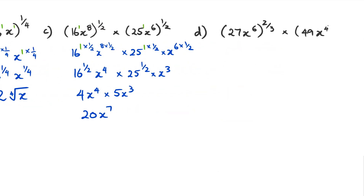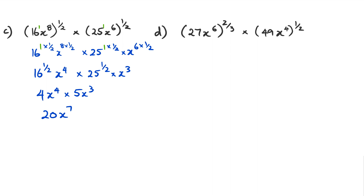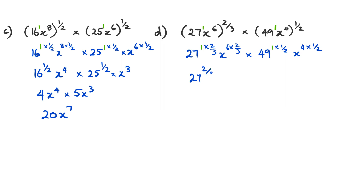Let's go to the next question — I'm just going to leave it here so you can have a look at that. The next question: we've got 27 to the power of 1, and 49 — I'll put a 1 there just to make things easy. So we've got 27 to the power of 1 multiplied by two thirds, and this whole thing multiplied by 49 to the power of 1 multiplied by half, and x to the power of 4 multiplied by half. So when we do this, we get 27 to the power of two thirds. Then 6 times two thirds: that's 12 over 3, which is 4. So x to the power of 4, multiplied by 49 to the power of half, and x to the power of 4 times half, which equals 2.